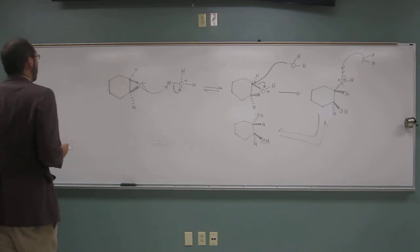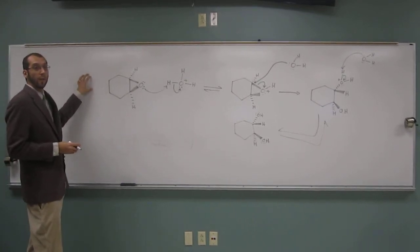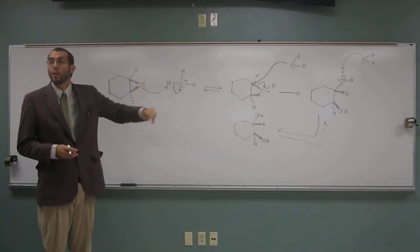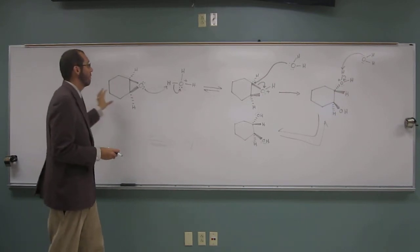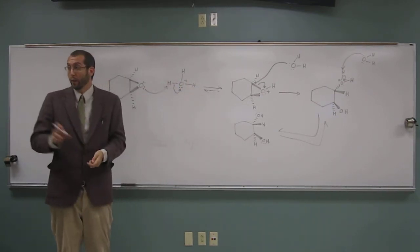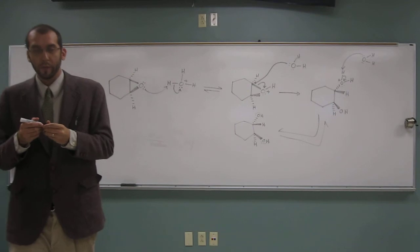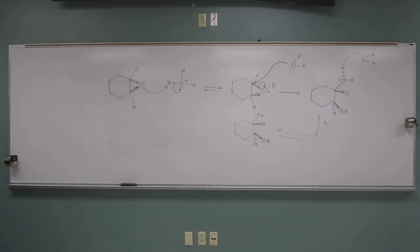You can get the trans-dial using MCPBA for your first step, and then acid for your second step. You could also get it using a base for your second step, like we were talking about earlier. So hydroxyl. Any questions on this one?